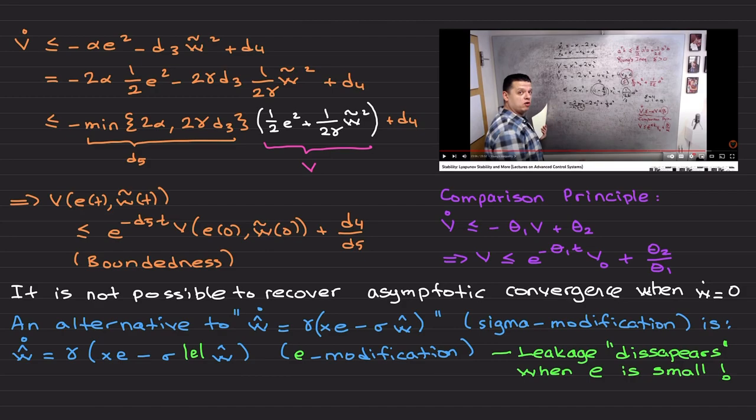E-modification is given here. We insert absolute value of error here with the understanding that when you are approaching the neighborhood of zero, this term also becomes zero and this leakage term disappears when error is small. This is a nice modification.